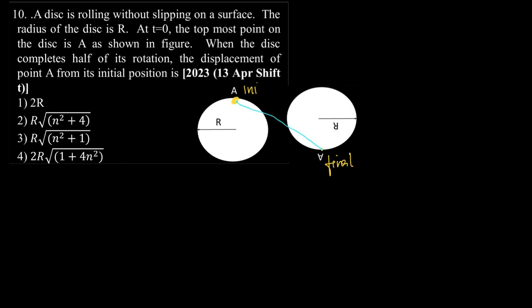This distance, let us say AA dash. Now it is very clear from the diagram that AA dash will actually be equal to the hypotenuse of this triangle.